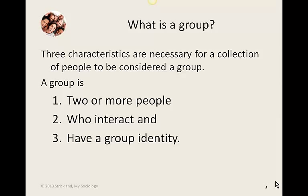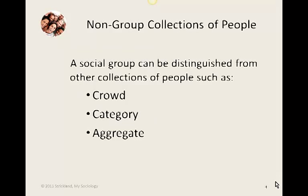The first thing we have to ask ourselves is: what is a group? The simplest way to define a group is to say that it has three characteristics, and this differentiates a group from other collections of people. A group has to have at least two or more people, those people have to interact — they can't just be standing around in the same place — and finally, they have to have a group identity. They refer to themselves as 'we.' This is our group.